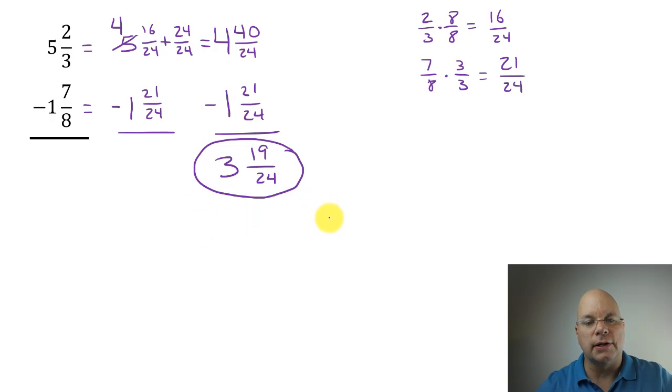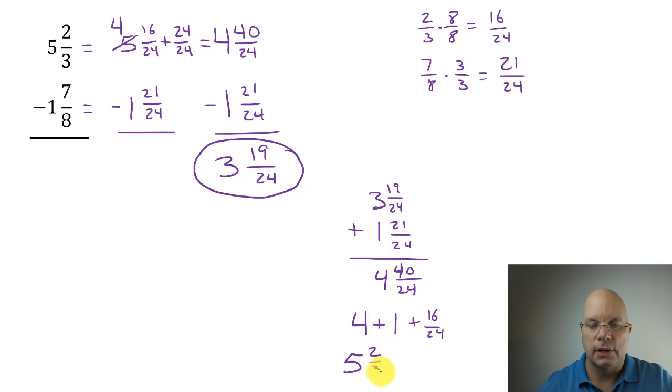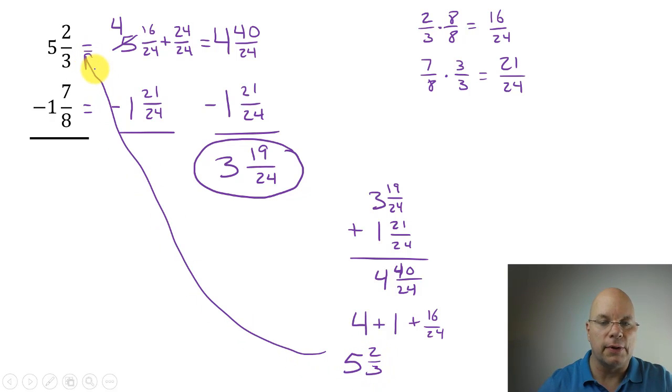One thing I want to talk about is checking your work. So if I take my 3 and 19/24 and I add it to our subtrahend here, 1 and 7/8—let's do it in the form 1 and 21/24—I would get 4 and 40/24. 40/24 is an improper fraction. It's equivalent to four plus one—24/24 is one—and I would have 16/24 leftover. 16/24 simplifies by dividing by a common factor of eight to 2/3. So I have 5 and 2/3, and that was our original minuend. So we know that we have the correct answer.